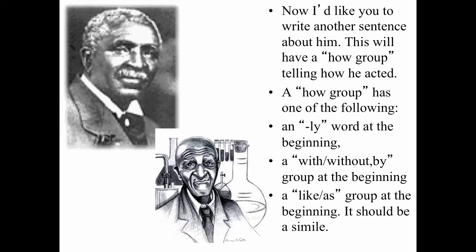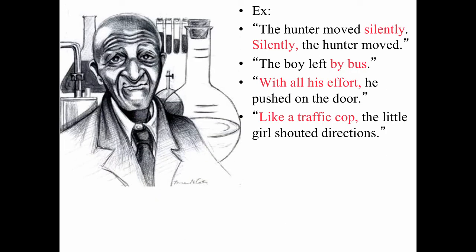Here are some example sentences. You can write 'the hunter moved silently,' but look how much better it is when you move 'silently' to the beginning: 'Silently, comma, the hunter moved.' It's just a lot more interesting. You can say 'the boy left by bus,' but look at how much nicer it is when the how group comes first: 'With all his effort, comma, he pushed on the door.' Or: 'Like a traffic cop, comma, the little girl shouted directions.' It's a nice way to vary the openings of your sentences.